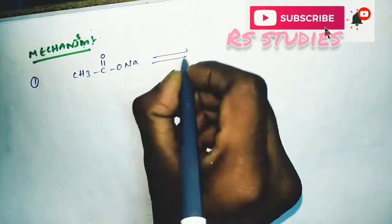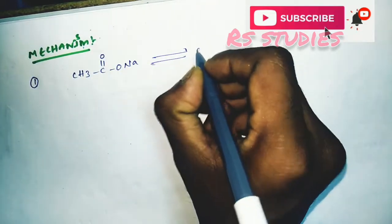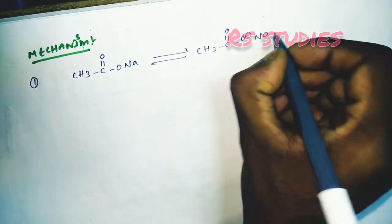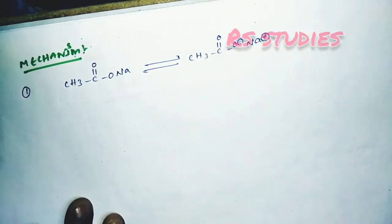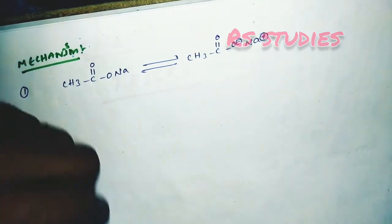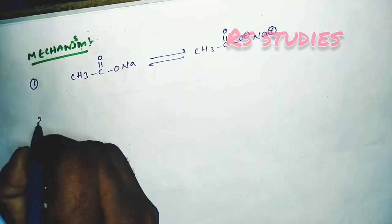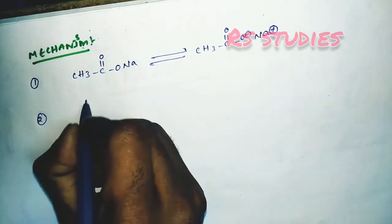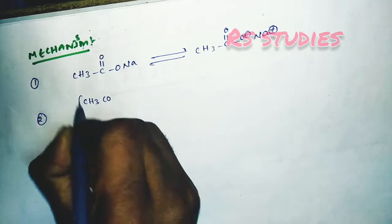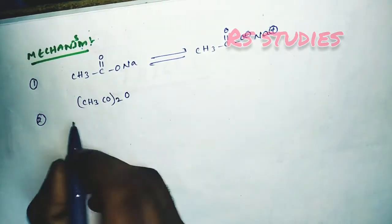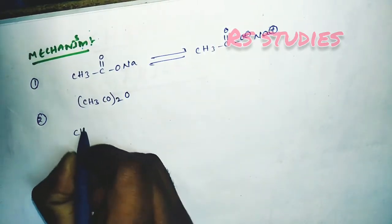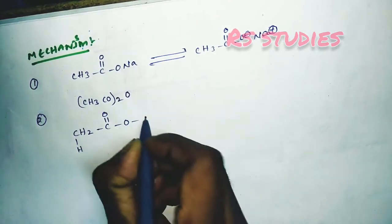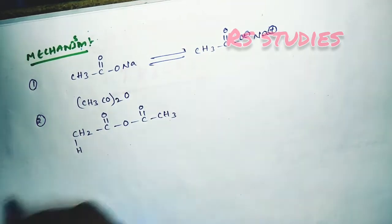In the first step, sodium acetate — CH3-C(=O)-O-Na — dissociates. CH3COO⁻Na⁺ dissociates to give the acetate ion CH3COO⁻. Then we add acetic anhydride: CH3-CO-O-CO-CH3.